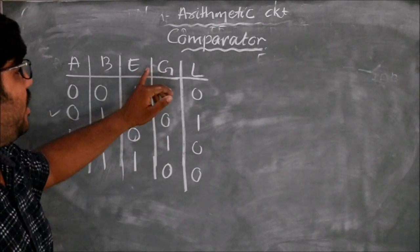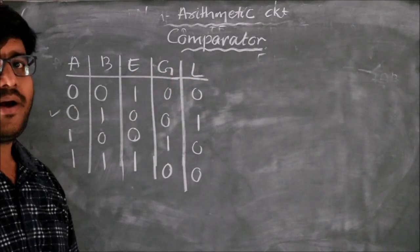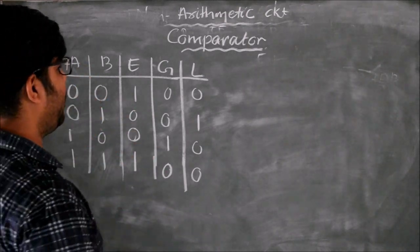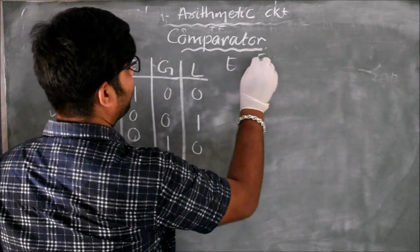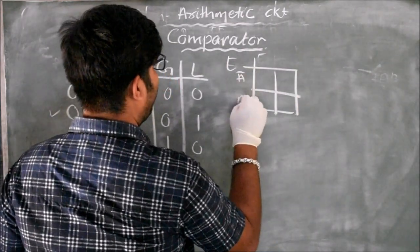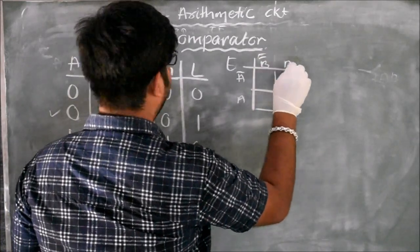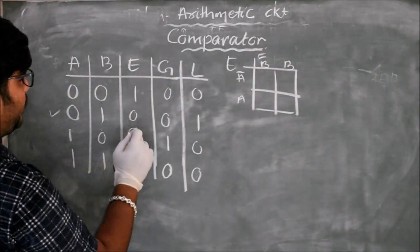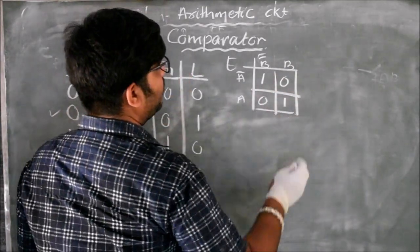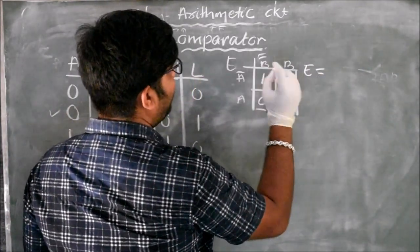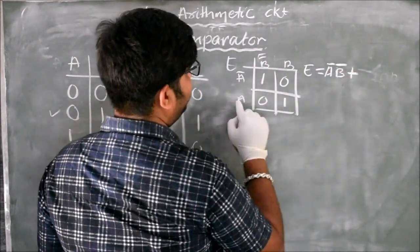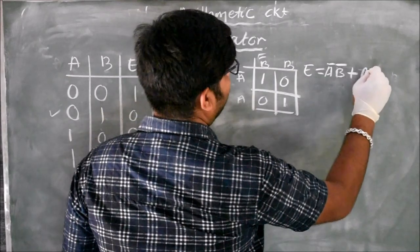Since I'm deriving three different outputs — equal, greater, and less — I need to make three K-maps, all two-variable K-maps. For equality, the K-map entries using A-bar, A, B-bar, B give: 1, 0, 0, 1, 1, 0, 0, 1.